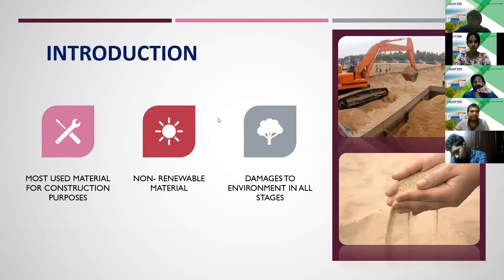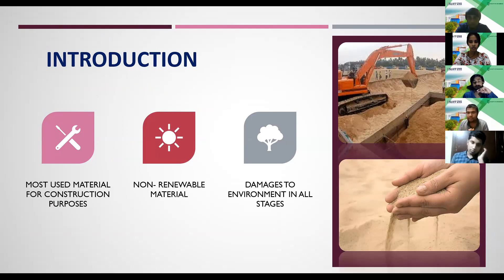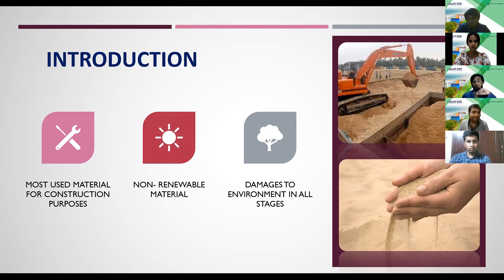This presentation deals with the different common substitutes for river sand used in construction. Since it is the second most used product in the world and in the construction field, river sand has become a limited resource. The effect is really significant because this is a non-renewable material, and extraction of river sand also has a lot of effects on ecological balance.